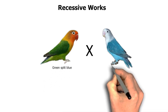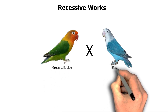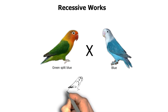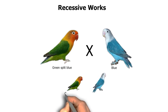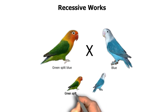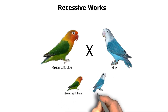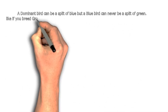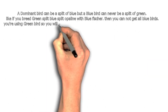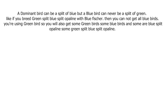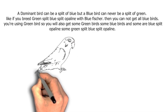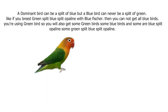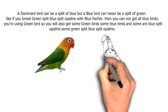But note: blue is simple — it's not a split of green, because it's not a dominant. A dominant bird can be a split of blue, but a blue bird can never be a split of green, because blue is not a dominant bird.